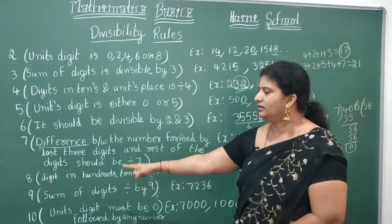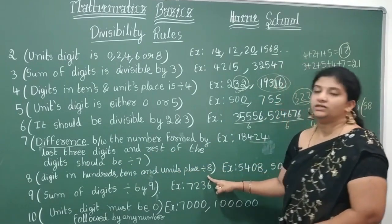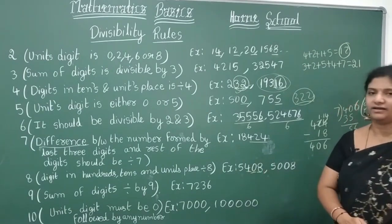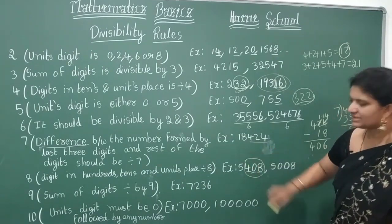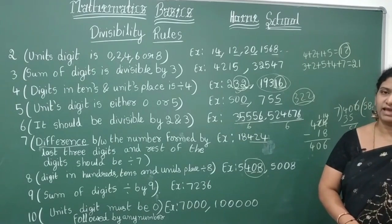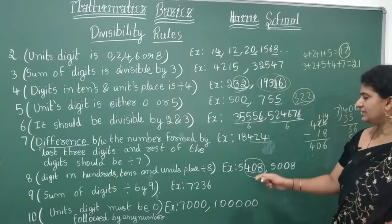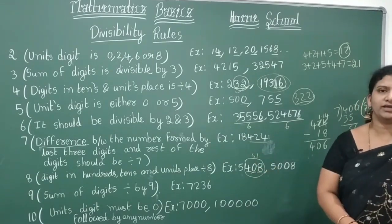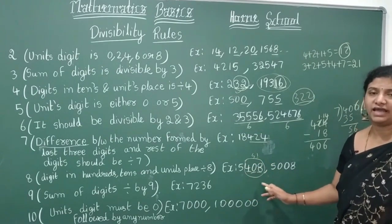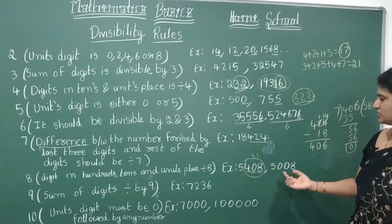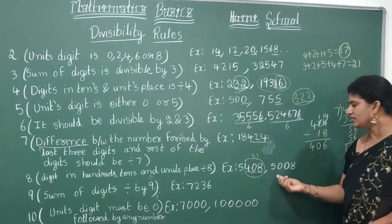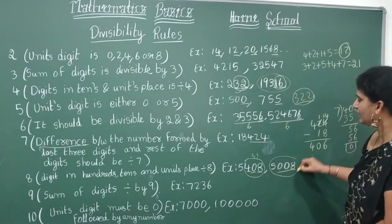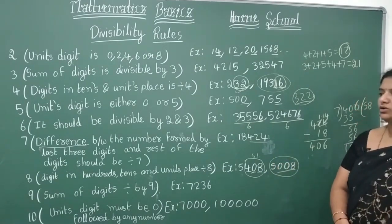Divisibility by 8: the digits in the hundreds, tens, and units place form a three-digit number. If that three-digit number is divisible by 8, then the full number is divisible by 8. For example, for 5408, the last three digits are 408. Check: 8 × 51 = 408, so 5408 is divisible by 8. Another example: if the last three digits are simply 8, and 8 × 1 = 8, the full number is divisible by 8.